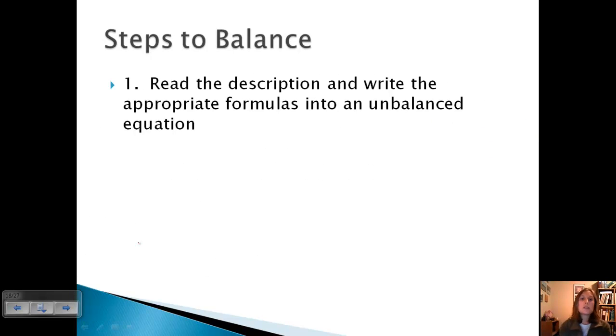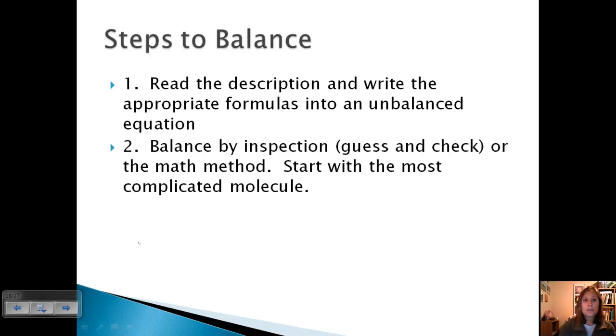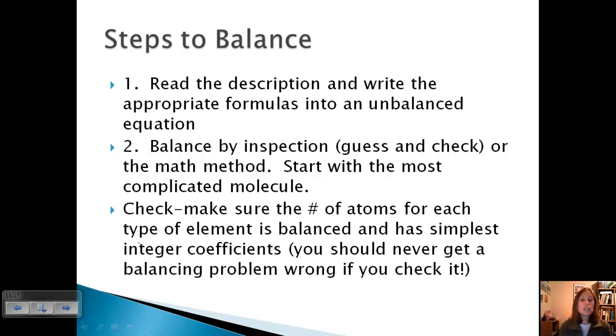Okay, so some steps to balance. We're going to read the description and write the appropriate formulas into an unbalanced equation. If the chemical formulas aren't given for you already and you have the word version, then you're going to need to write the balanced chemical formulas first. We can balance by inspection, which we call guess and check, or the math method. Usually when you're doing guess and check, you start with the most complicated molecule. And then check - make sure that the number of atoms for each type of element is balanced and is the simplest. You should really never get any of these wrong if you go back and check your work. If they don't come out right, then you need to try again. So don't give up on them - they all have a correct answer.